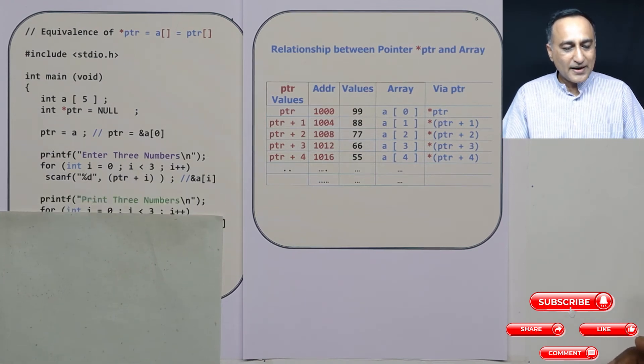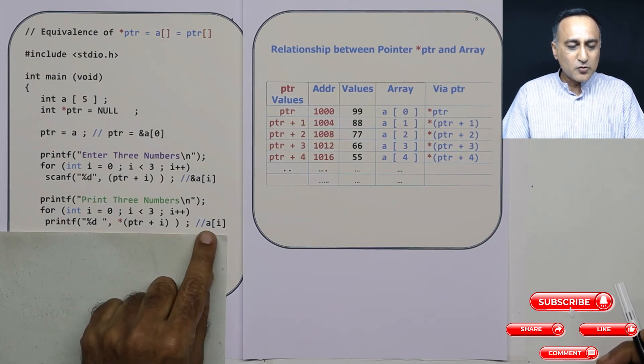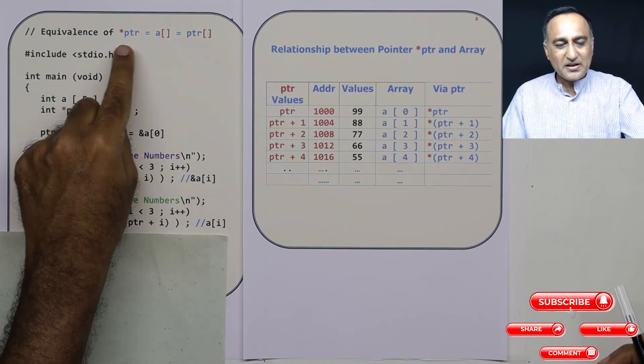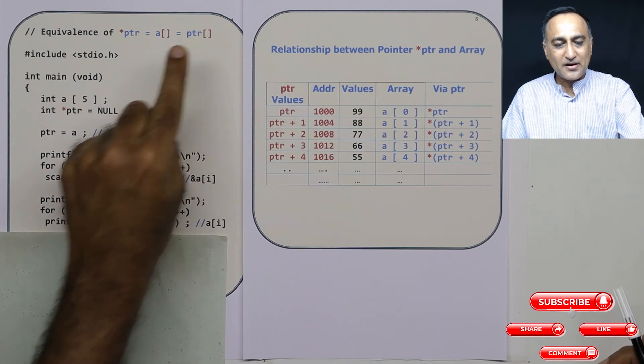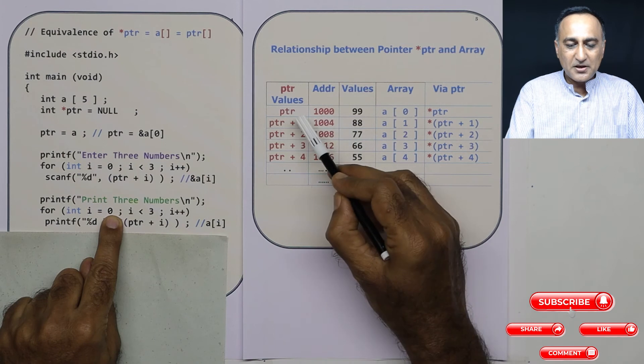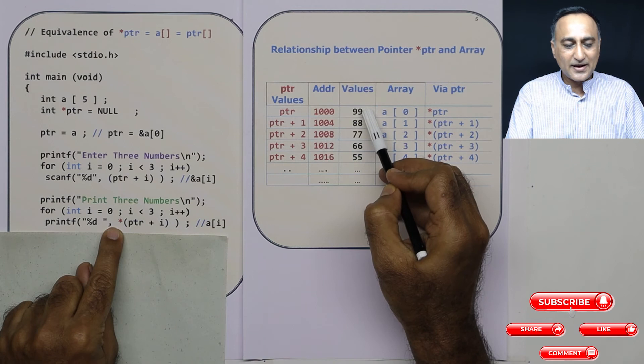Now in order to go ahead and print the three numbers, it's quite simple. Generally I will print using a[i], but since I told you this *ptr is the same as a[square bracket] is the same as ptr[square bracket], what I am doing is I am saying ptr plus 0. ptr plus 0 is referring to address 1000, star value at address 1000, 99.